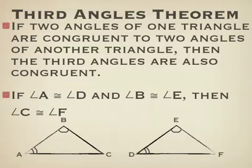The Third Angle Theorem states that if two angles of one triangle are congruent to two angles of another triangle, then the third angles are also congruent. For example, if angle A is congruent to angle D and angle B is congruent to angle E, then angle C must be congruent to angle F. This makes sense because the three angles of a triangle must add up to 180 degrees — if two pairs of angles are equal, the third pair must be equal as well.